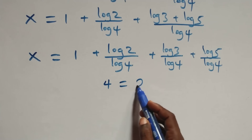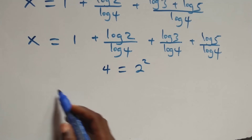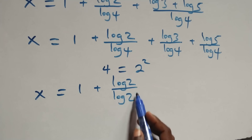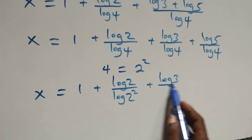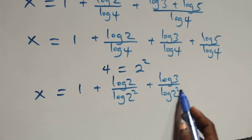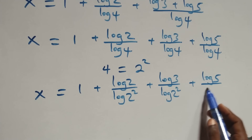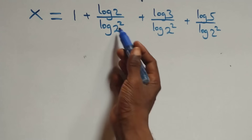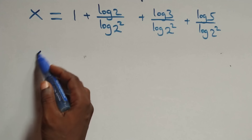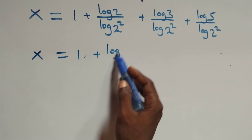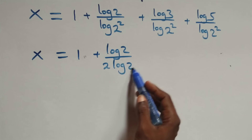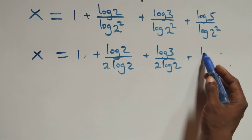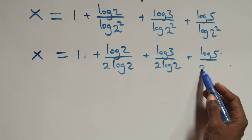We can write 4 as 2 squared. This becomes x equals 1 plus log 2 over log(2²) plus log 3 over log(2²) plus log 5 over log(2²). Applying the power of logarithm rule, the 2 comes down in each denominator, giving x equals 1 plus log 2 over 2 log 2, plus log 3 over 2 log 2, plus log 5 over 2 log 2.